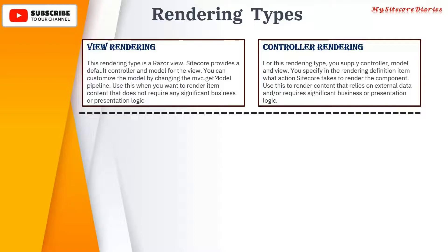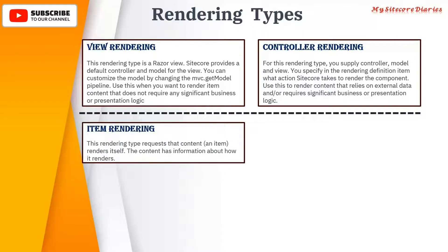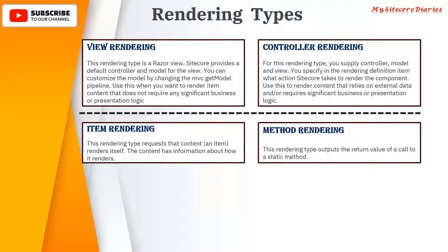There are other rendering types as well. Item rendering is where the item itself renders — the content has information about how it renders. Method rendering outputs the return value of a call to a static method.